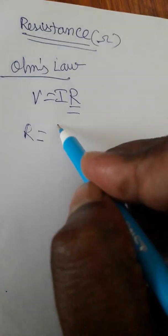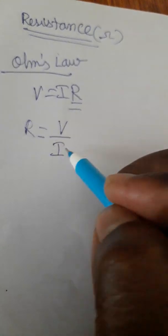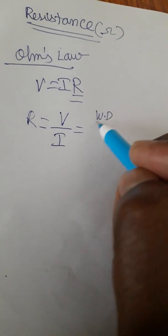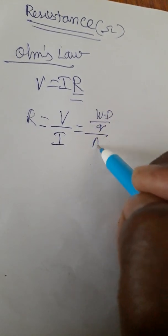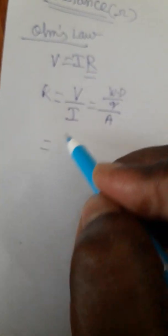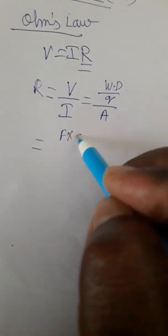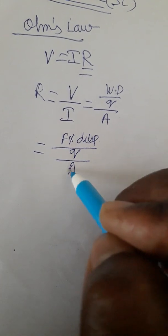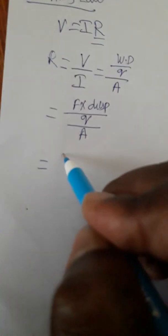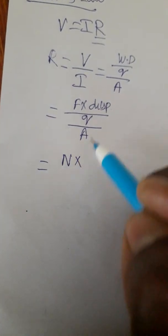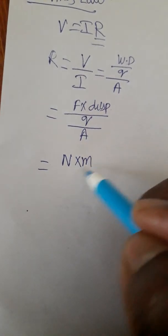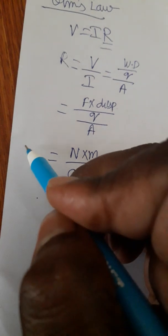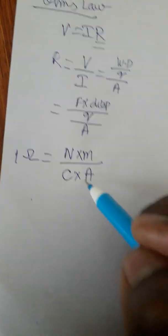Resistance is equal to volt by current. We know volt is work done by charge, current is ampere. So work done is force into displacement, divided by charge, divided by ampere. We know force SI unit is Newton, displacement SI unit is meter, charge SI unit is coulombs and ampere. This is the SI unit of 1 Ohm.